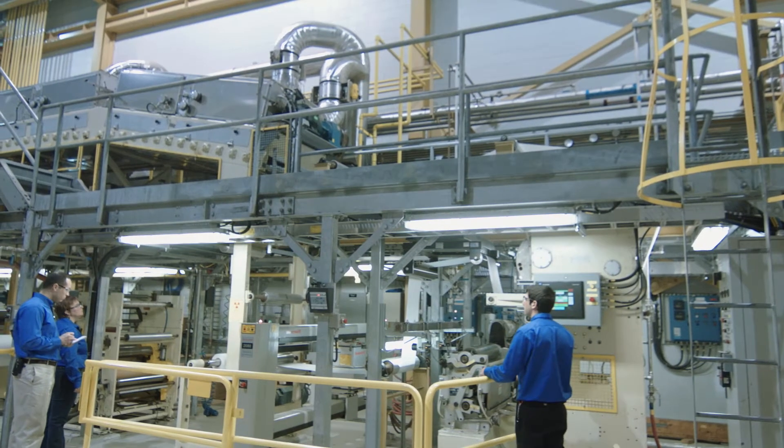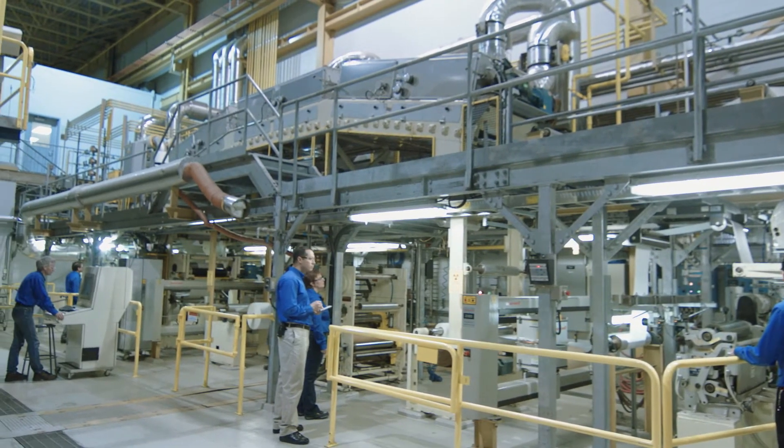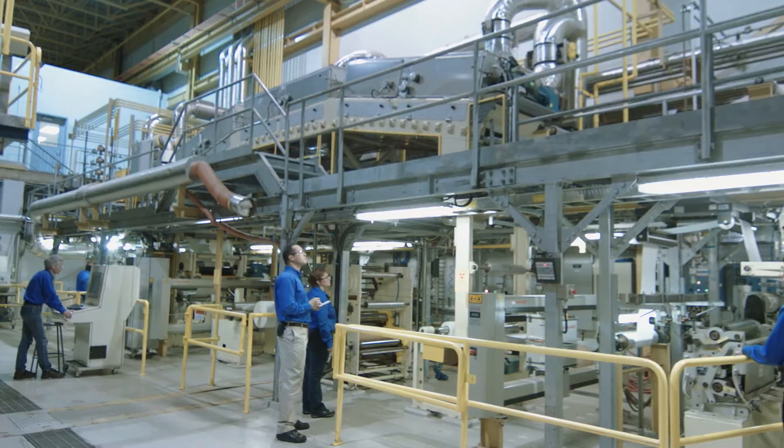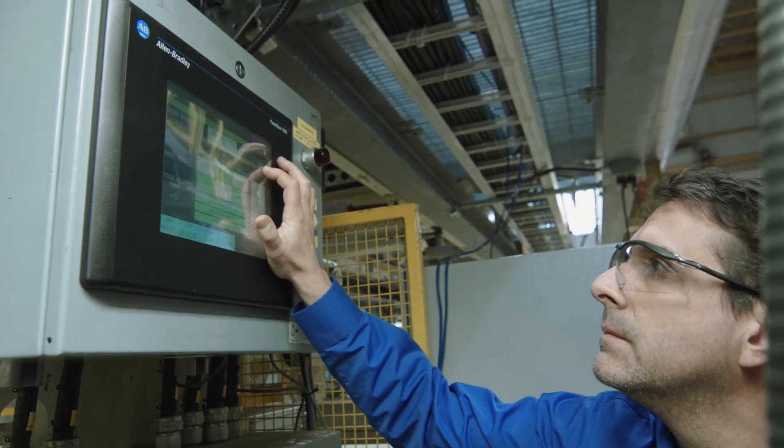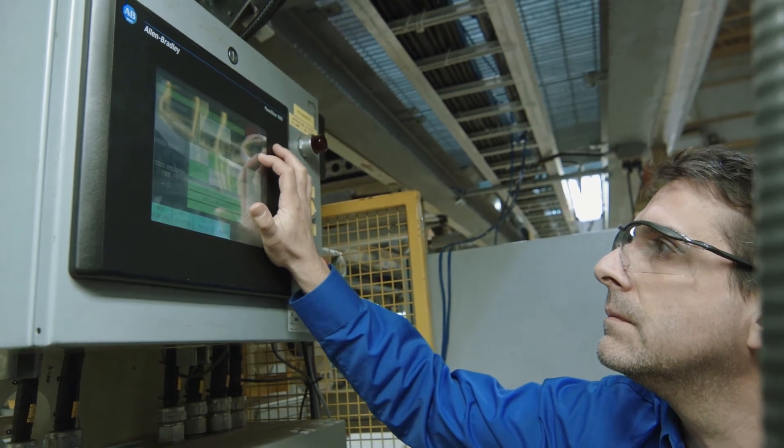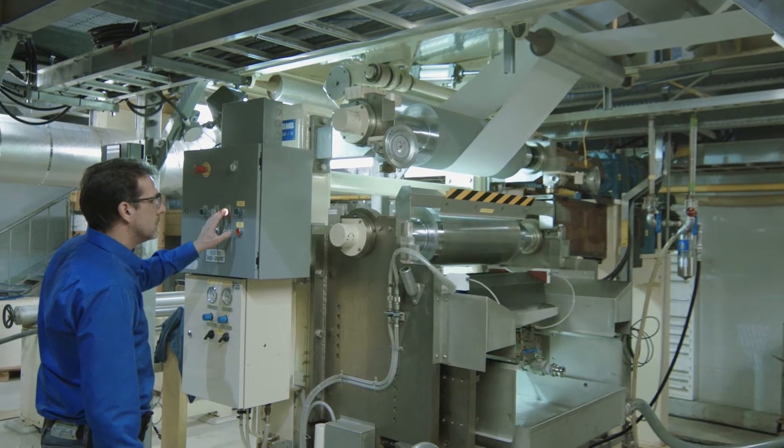Bioactive paper can be produced at a pilot scale on a versatile and flexible surface treatment machine that is used for blade, rod and gravure coating as well as for extrusion coating and lamination. The first step in pilot manufacturing is installing the coating die.